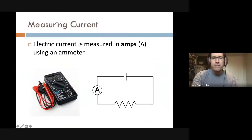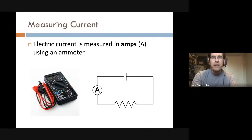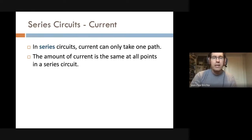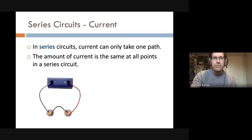Looking at the diagram, I have a battery in a series circuit where the current has only one path to take. In that case, the current is the same everywhere in the circuit — similar to water in a single stream, where the amount of water is always the same no matter where you are in the stream.